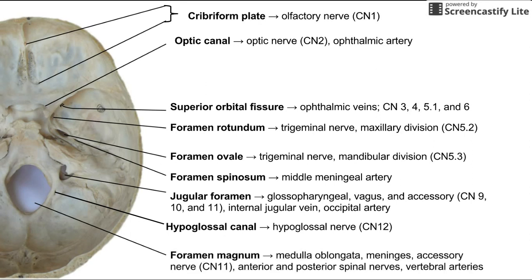And lastly, the large foramen magnum has the medulla oblongata going through it — that's the lower part of the brain stem. The meninges also traverse through the foramen magnum. The accessory nerve going to the traps, cranial nerve 11, also goes through the foramen magnum, as well as the anterior and posterior spinal nerves and the vertebral arteries.